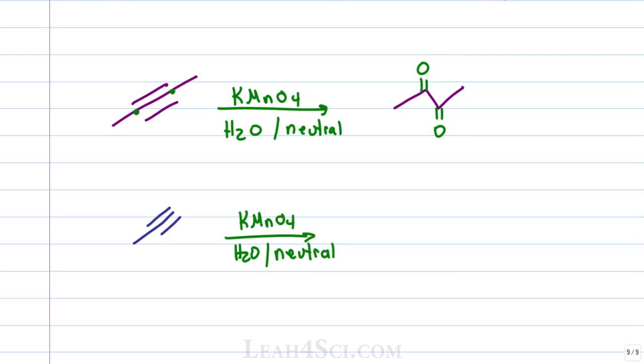If you carry out the same reaction on a terminal carbon, it'll start out trying to give you a diketone but KMnO4 is a strong oxidizing reagent and it'll wind up turning that terminal carbon into a carboxylic acid making it even more oxidized because of that extra third bond to oxygen.